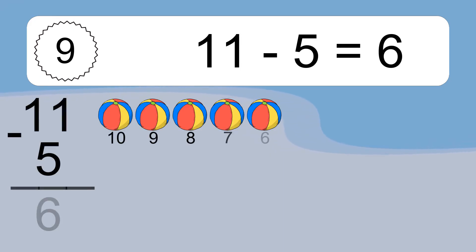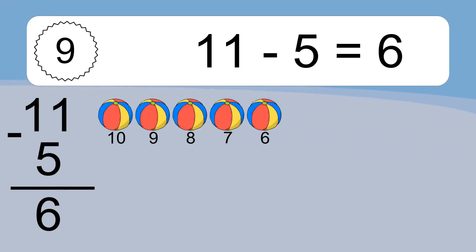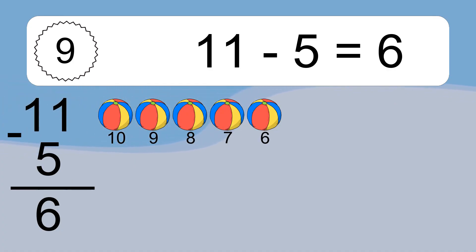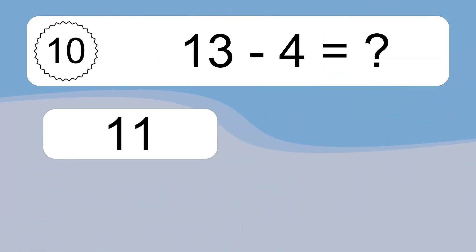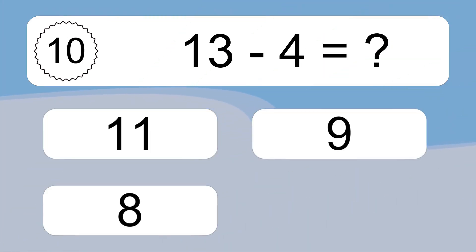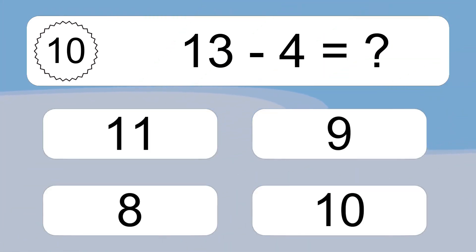11 minus 5 equals what? 11 minus 5 equals 6. Let's count it: 10, 9, 8, 7, 6.